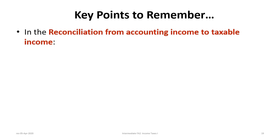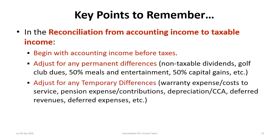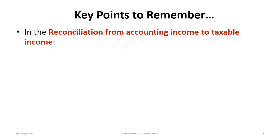In the reconciliation from accounting to taxable income, begin with accounting income before taxes, then adjust for any permanent differences — such as non-taxable dividends, golf club dues, 50% of meals and entertainment, 50% of capital gains, etc. Then adjust for temporary differences — such as warranty expense estimated versus actual, pension expense versus actual contributions, depreciation versus CCA, deferred revenues, deferred expenses, etc. Finally, calculate taxable income and current income tax expense using the current enacted tax rate.